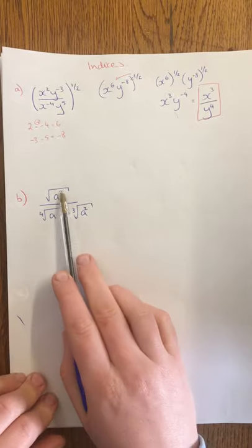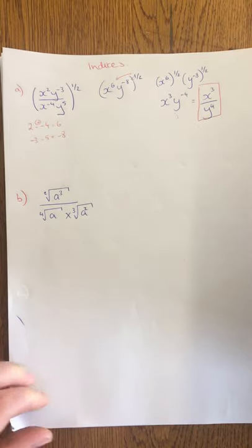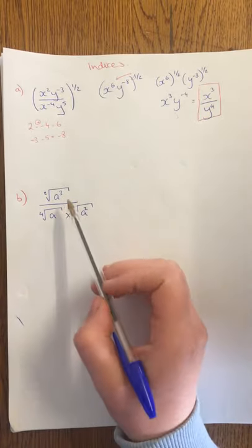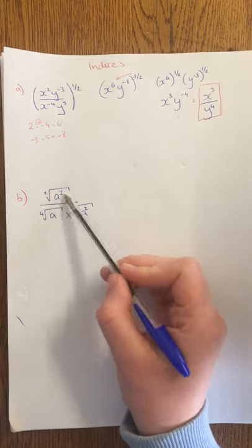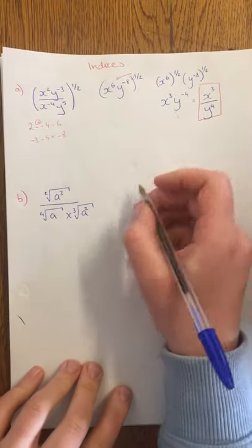So anytime we have a square root, I want you to put a 2 in there like that just to remind yourself. So the first thing I'm going to do is remove the square roots. And remember, it's going to become a fraction then.